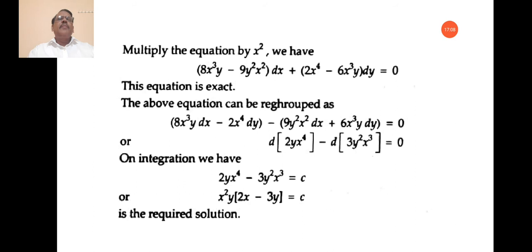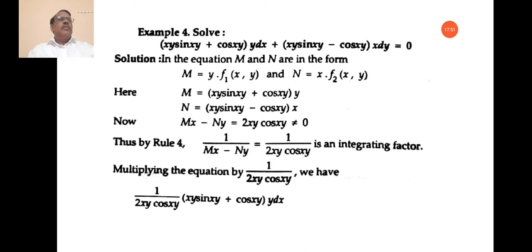In this problem we applied Rule 2. The key: if ∂M/∂y ≠ ∂N/∂x, take (1/N)(∂M/∂y − ∂N/∂x). If this is a function of x alone, then e to the power of integral of f(x)dx becomes the integrating factor for the given differential equation. Multiply the equation by the integrating factor; the equation becomes an exact differential equation, which you then solve.